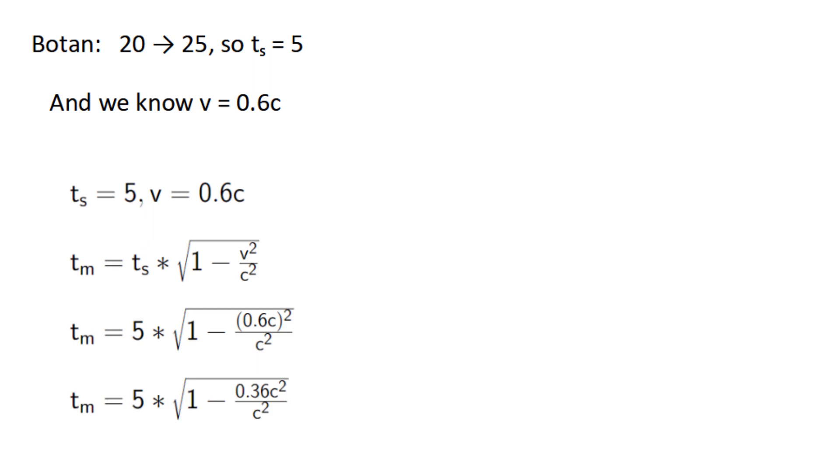and we're left with 1 minus 0.36, which is 0.64. The square root of that is 0.8, and 5 times 0.8 is 4, so tm equals 4.